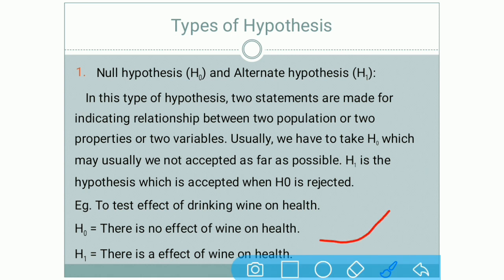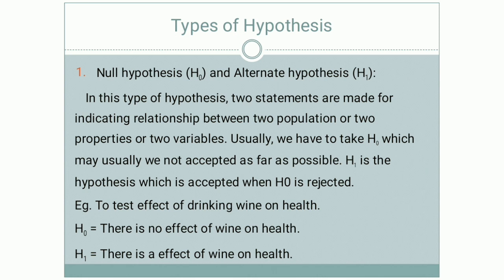In short, the null hypothesis is prepared in a way that it is majorly rejected, so the alternate hypothesis will be accepted. Majorly, the null hypothesis is prepared in a negative way so it can be rejected — though not 100% of the time. So null hypothesis and alternative hypothesis are two statements indicating relationship between two populations, two properties, or two variables, used simultaneously with each other.